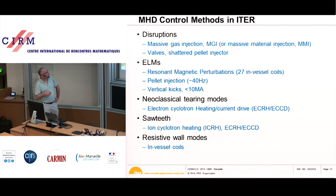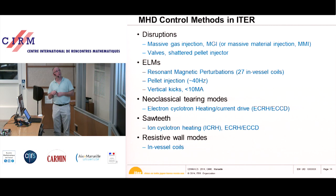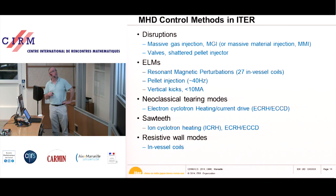Neoclassical tearing modes will be controlled by electron cyclotron heating and current drive. With electron cyclotron heating you can locally apply a very localized current inside the magnetic island created by the tearing mode, making the island shrink and disappear. This method works very well in current tokamaks, so we are quite confident it will work in ITER.